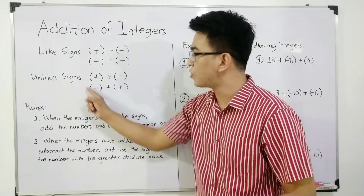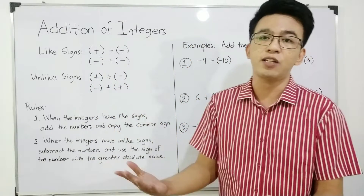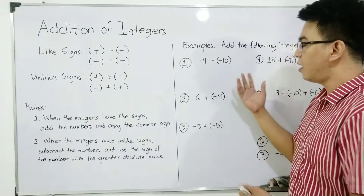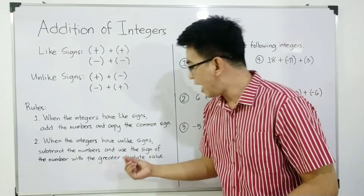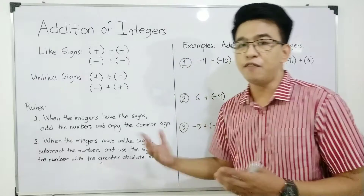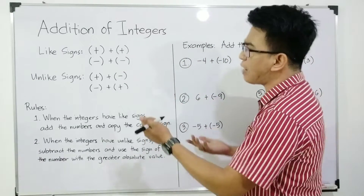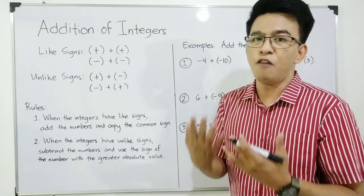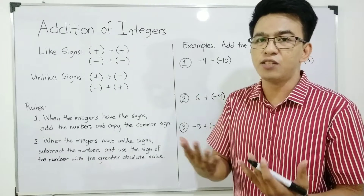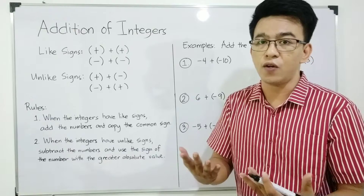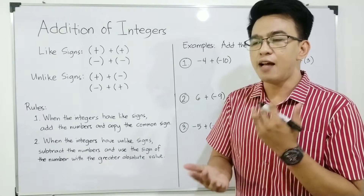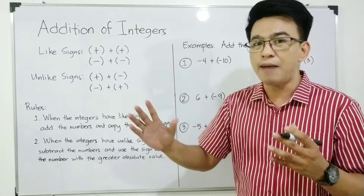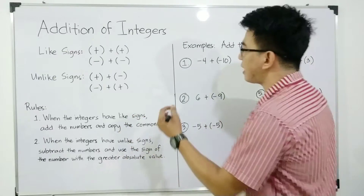For rule number two, ito yung makikita natin yung situation — magkaibay ba yung signs ng integers. But before we start doing these examples, meron dito na banggit na absolute value. So, review tayo, guys. Pag sinabi natin yung absolute value, guys, it is defined as the distance of a number or integer from zero. That's why, ang ating absolute value is always positive because it talks about the distance. Now, let's have an example.